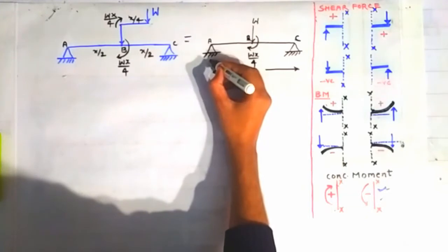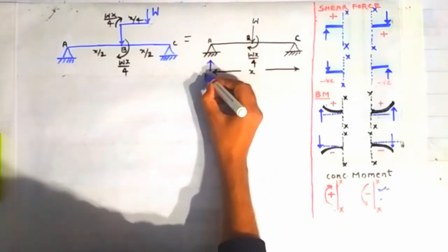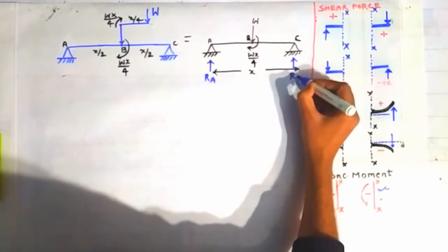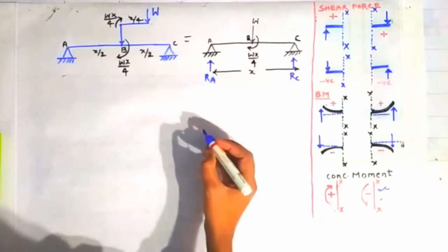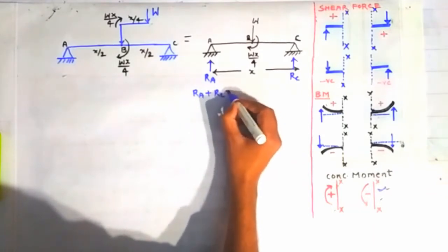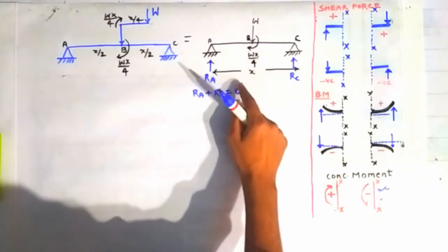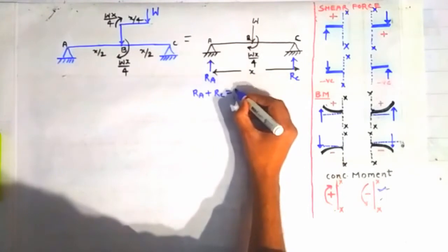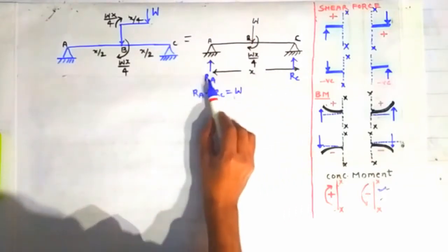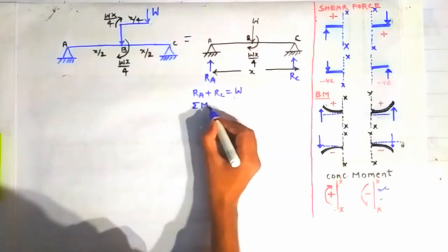The first step is to find out the reactions at points A and C. Let us suppose the reaction at A is acting vertically upward and the reaction at C is also acting vertically upward. Using the equilibrium equation: Ra + Rc = W, because there is a load W acting vertically on this beam.